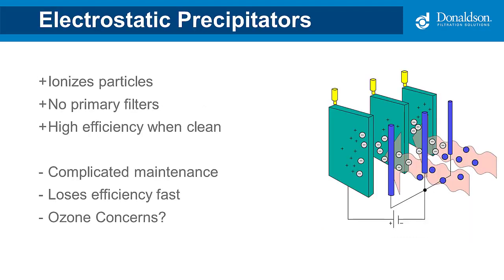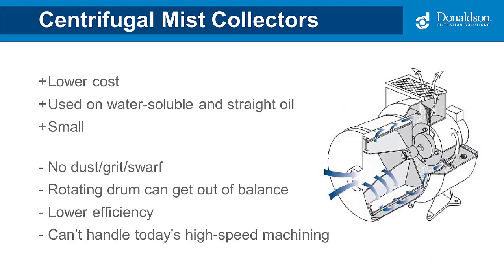There are also electrostatic collectors. These units work by ionizing the mist particles — negatively charged particles are drawn to a positively grounded plate and drain. Electrostatic collectors were considered attractive because they don't have primary filters to replace and are considered pretty efficient when clean. However, the cleaning process can be a real maintenance hassle and is pretty frequent. Lastly, centrifugal is the oldest technology, using centrifugal force to pull mist-laden air into a drum with a rotating blade. They're usually acceptable for higher volumes of larger particles but not nearly as efficient with swarf or smaller mist particles.